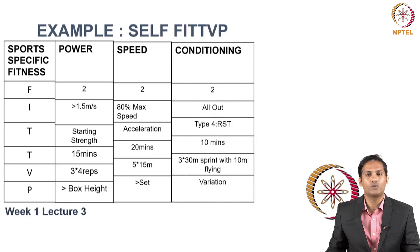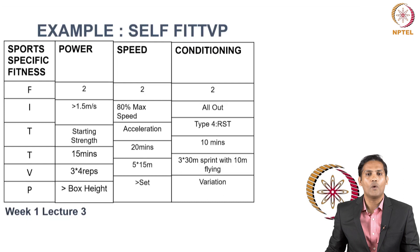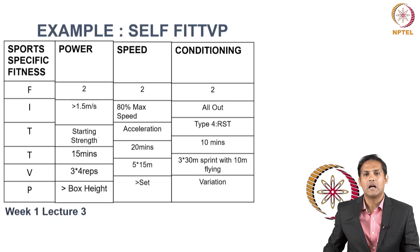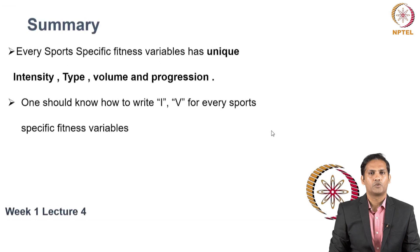For conditioning: I again train 2 times per week targeting Type 4 conditioning. The type of stimulation I use is repeated sprint intervals. The total duration of the conditioning session is 10 minutes. I vary the conditioning stimulation type — so in one session I may do repeated sprint intervals, and in another session I will do sprint intervals.